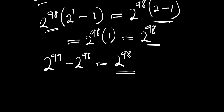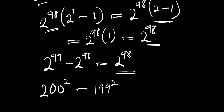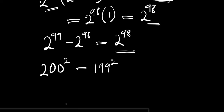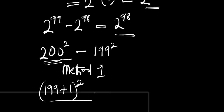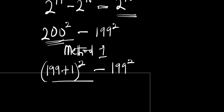Now there's another similar problem: 200 squared minus 199 squared, evaluated without a calculator. I'm going to give you two different methods. In Method 1, we rewrite 200 as 199 plus 1, so we have 199 plus 1, all squared, minus 199 squared.